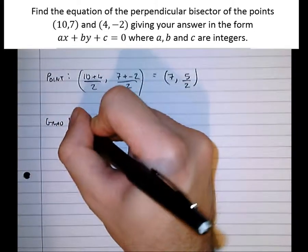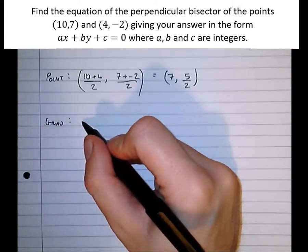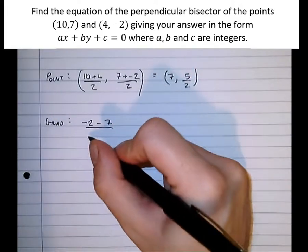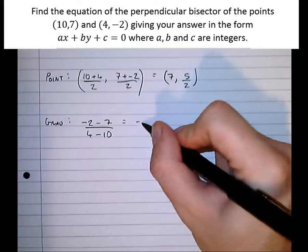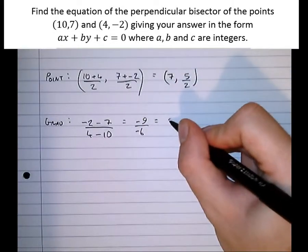So the gradient between (10,7) and (4,-2) is the y difference: minus 2 minus 7 over the x difference, 4 minus 10, which is minus 9 over minus 6, which cancels to 3 over 2.